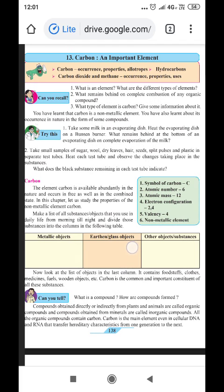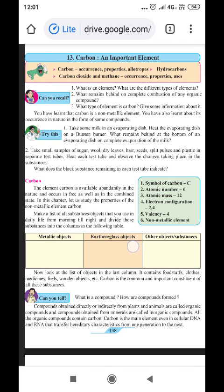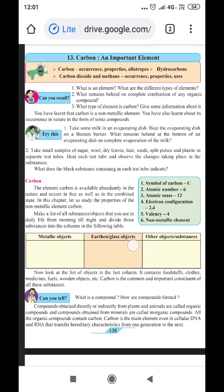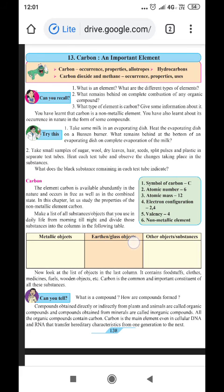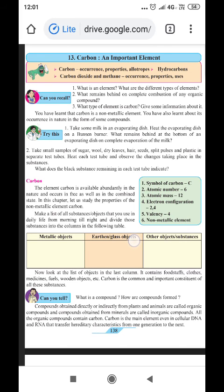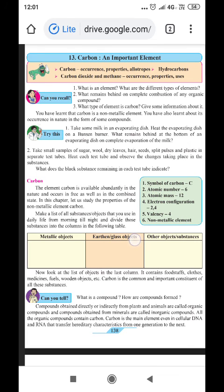First of all, we'll discuss something about the element carbon. Now, in order to understand the concept of carbon element, here some demonstration is being done. Take some milk in an evaporating dish. Heat the evaporating dish on a Bunsen burner. What happens at the bottom of the evaporating dish on complete evaporation of the milk?